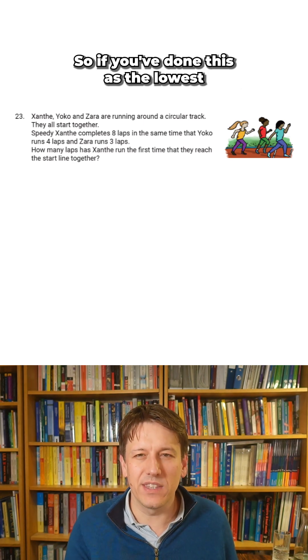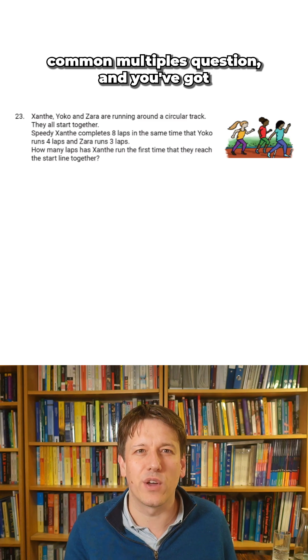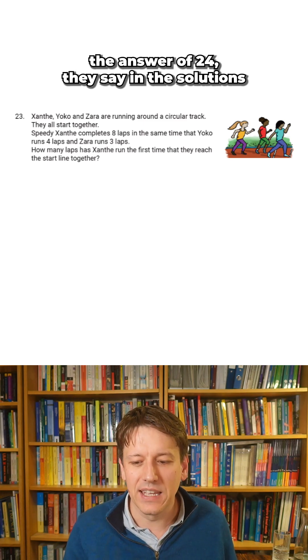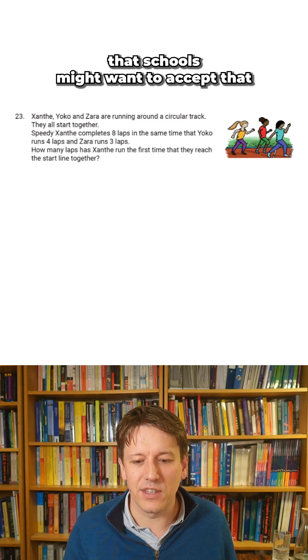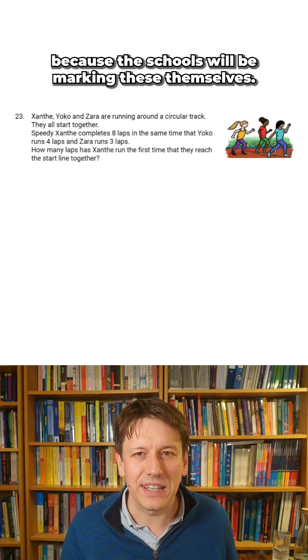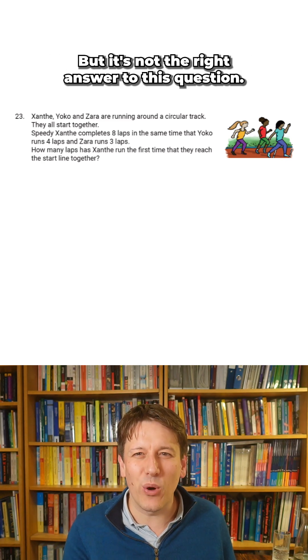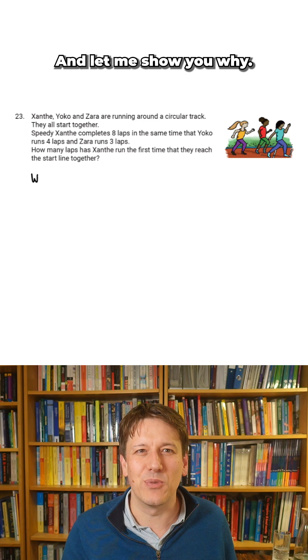So if you've done this as a lowest common multiples question and you've got the answer of 24, they say in the solutions that scorers might want to accept that because the scorers will be marking these themselves. But it's not the right answer to this question. And let me show you why.